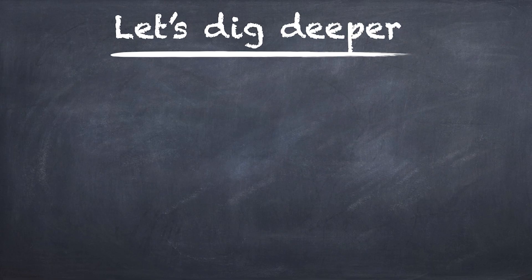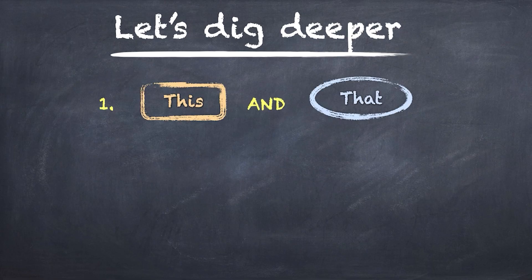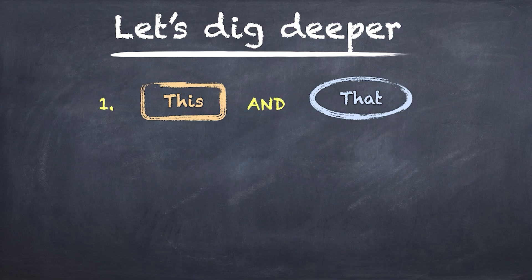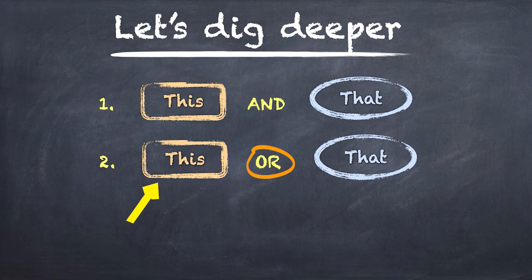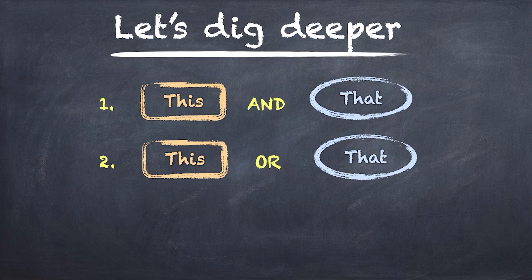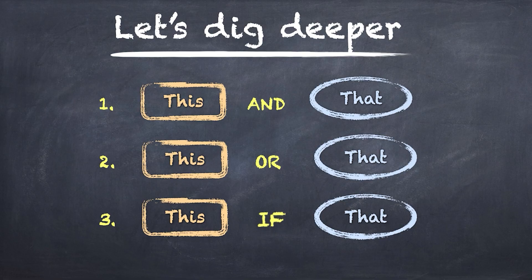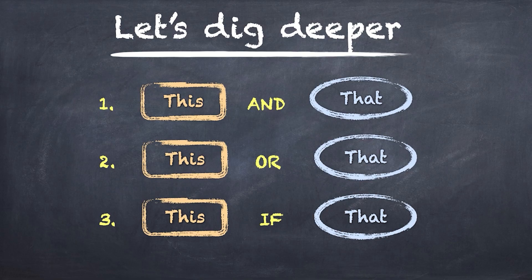Now let's dig a little deeper — this is where things get fun and interesting. In this video, we'll learn about how to calculate the probability of this happening and that happening. So how likely is it that if I toss a coin and roll a dice, I'll get a heads and get a three. We'll also look at the probability of this or that happening — if I roll a dice, how likely is it that I get a three or a two? And what about conditional probability? That's the chances of this happening if that has already happened. So if you're playing poker and you know that you've got an ace, what are the chances that it's an ace of spades?